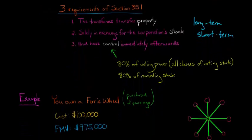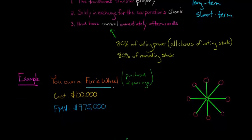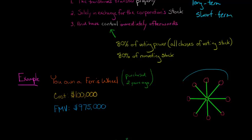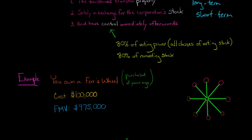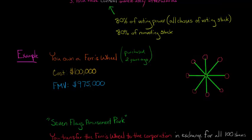Let's jump into an example. Let's pretend that you own a Ferris wheel that you purchased two years ago. Your adjusted basis in the Ferris wheel is $100,000, and the fair market value of that Ferris wheel is $975,000.